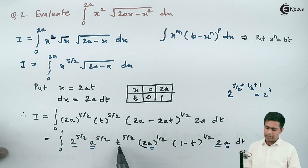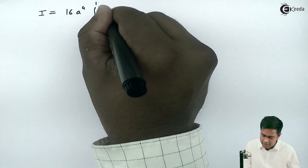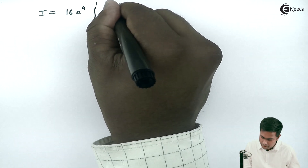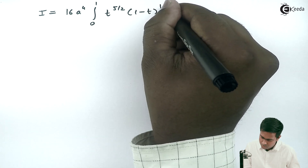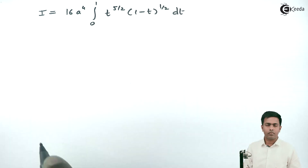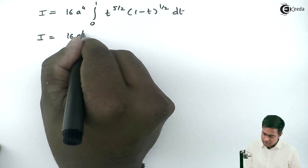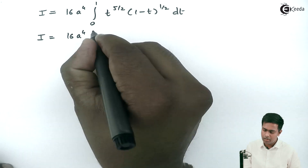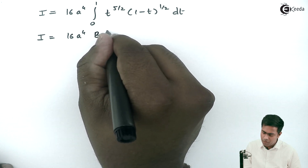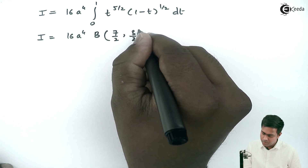So we get i as 16a raised to 4 times the integration from 0 to 1 of t raised to 5/2 times (1 minus t) raised to 1/2 dt. This integral is matching with the definition of the beta function, and it becomes beta(7/2, 3/2).